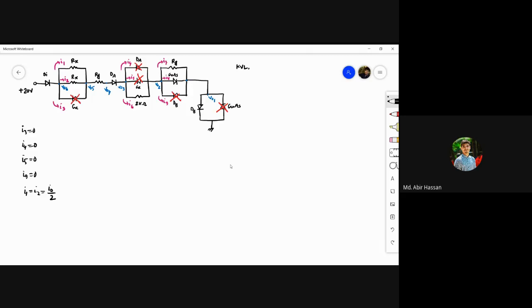Applying KVL: minus 20 plus 0.7 for the silicon diode, plus Rx into i0 by 2, plus i0 into Ry, plus Von of da.